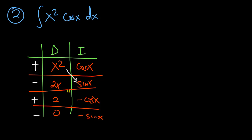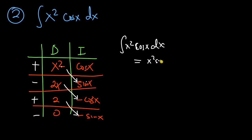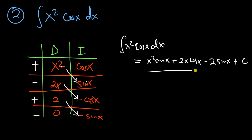Then we multiply the adjacent functions. Positive x² times sine X gives x²·sin X. Minus 2x times negative cos X gives positive 2x·cos X. And 2 times negative sine X gives minus 2·sin X, plus a constant of integration. That's our final solution, and again you can see it's really fast and easy.